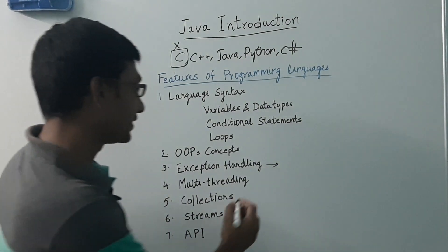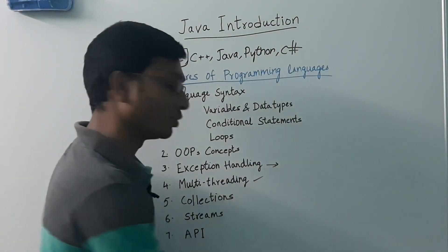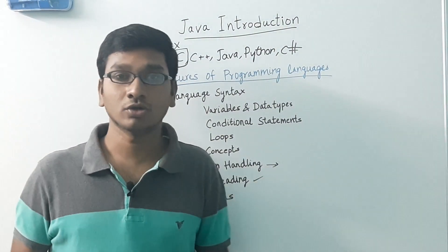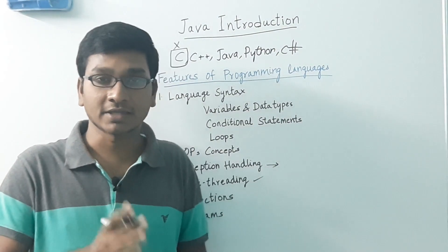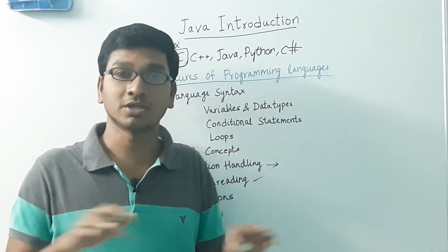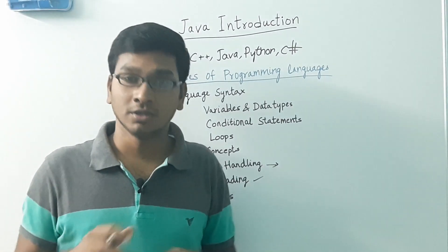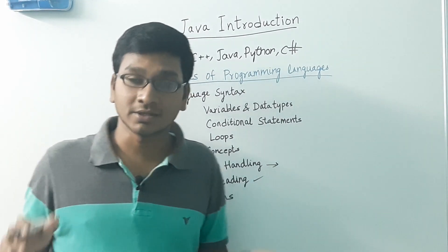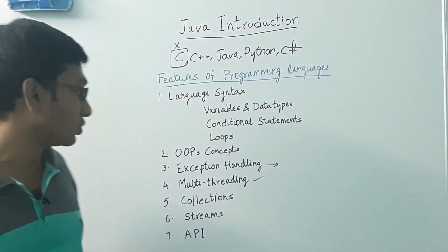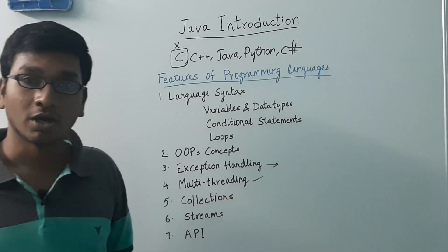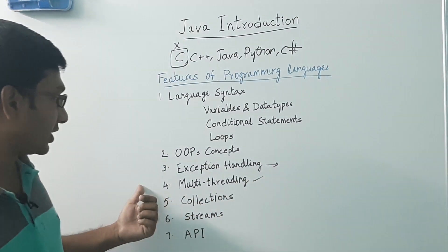Next is multi-threading. We have a task and we want to divide that task into subtasks and run all the subtasks in parallel or simultaneously at the same time. That is what we call multi-threading.